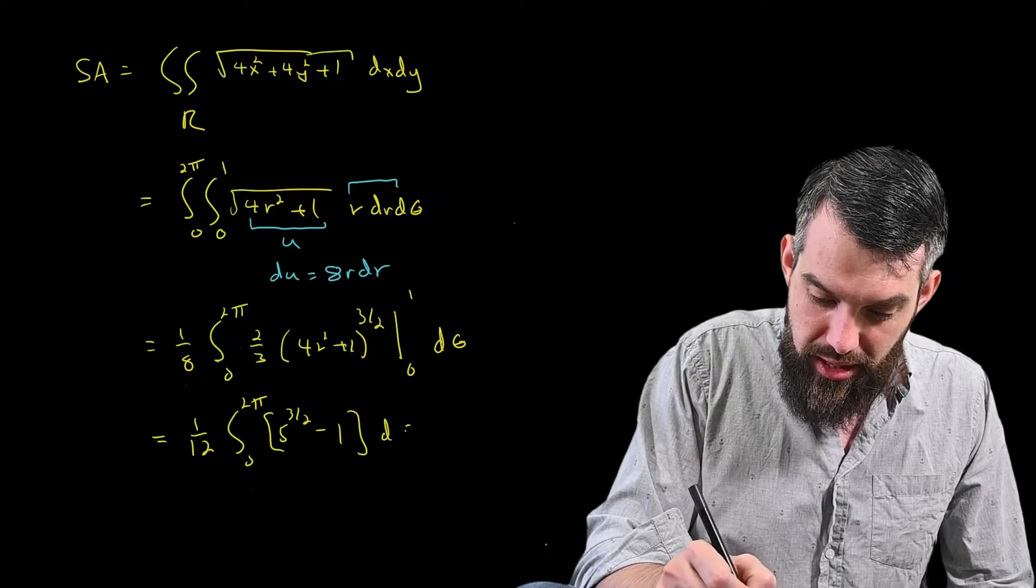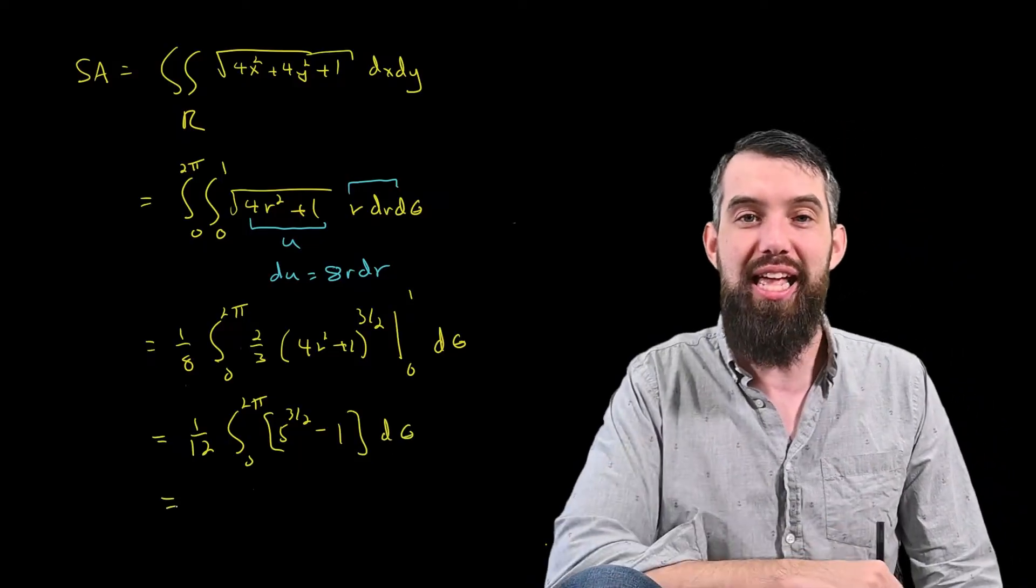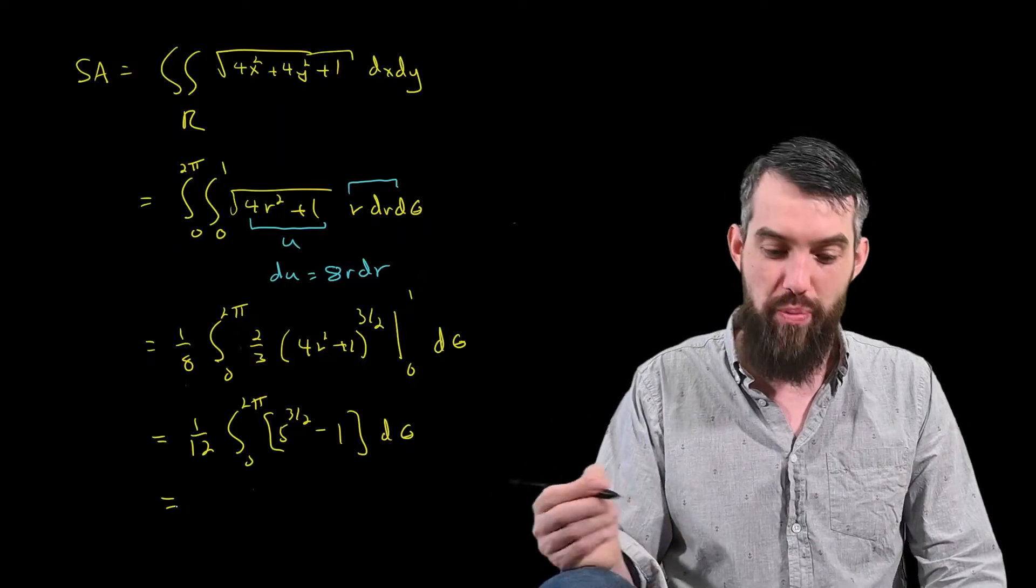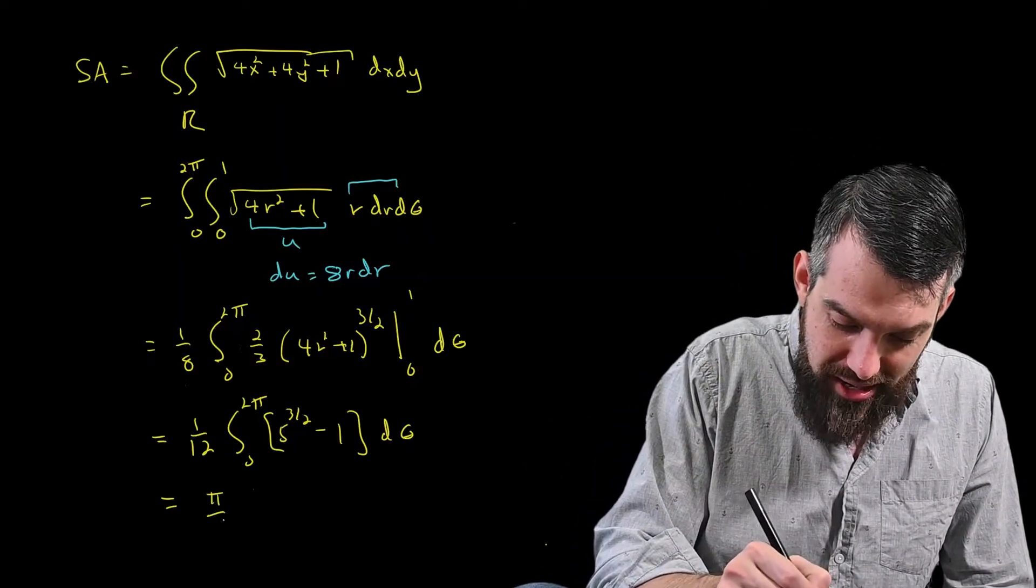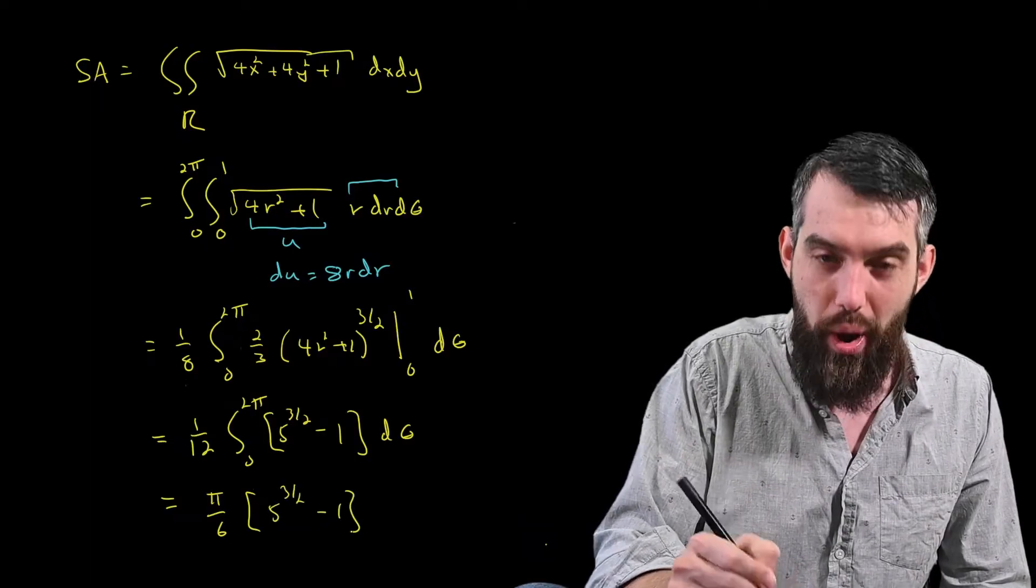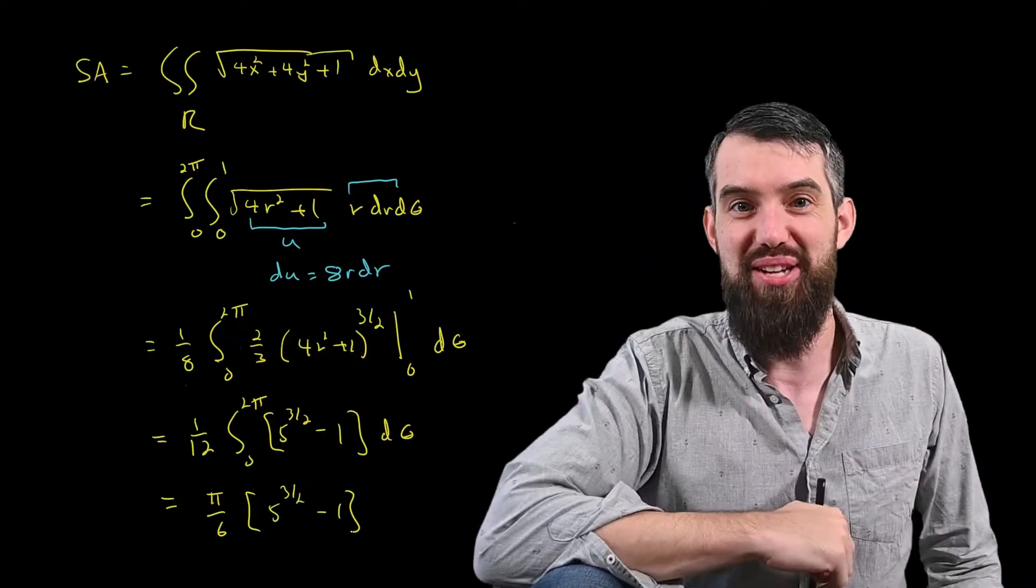Fortunately, there actually is no theta values in there, so the next integral is just easy enough. It's just a 2 pi, and so I get pi divided by 6. What a mess. 5 to the 3 halves, minus 1. And that's my final answer.